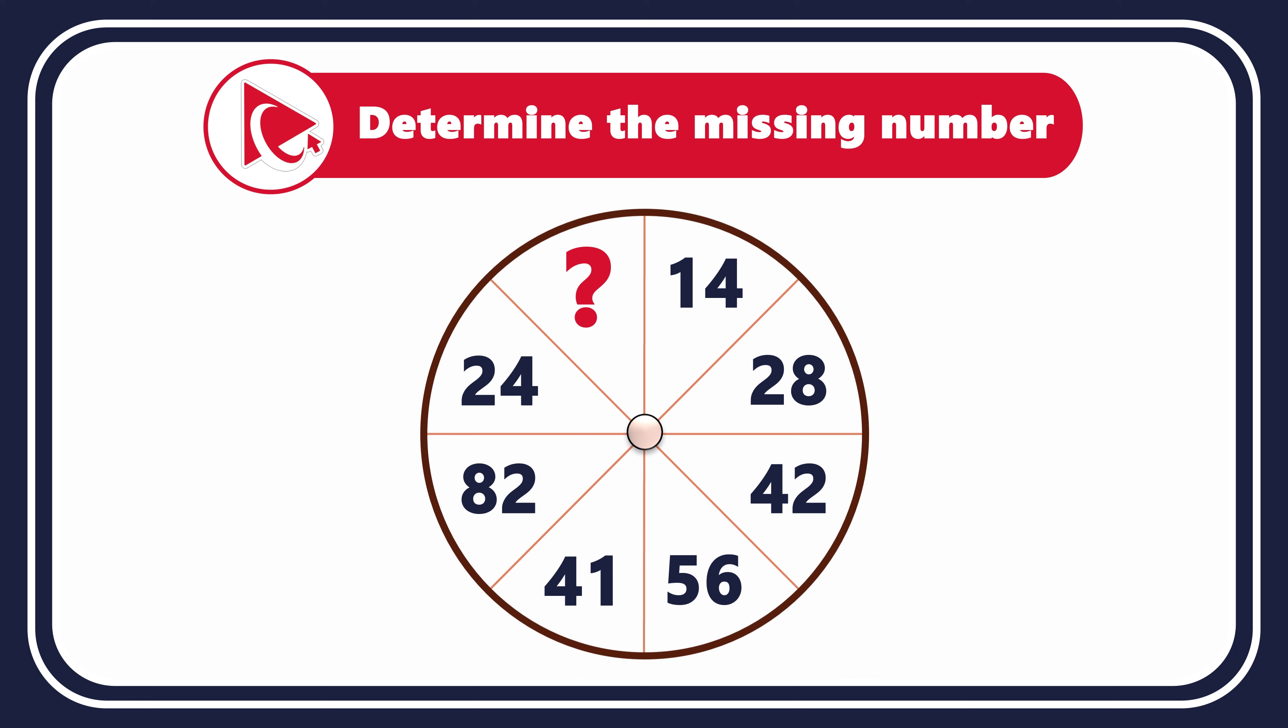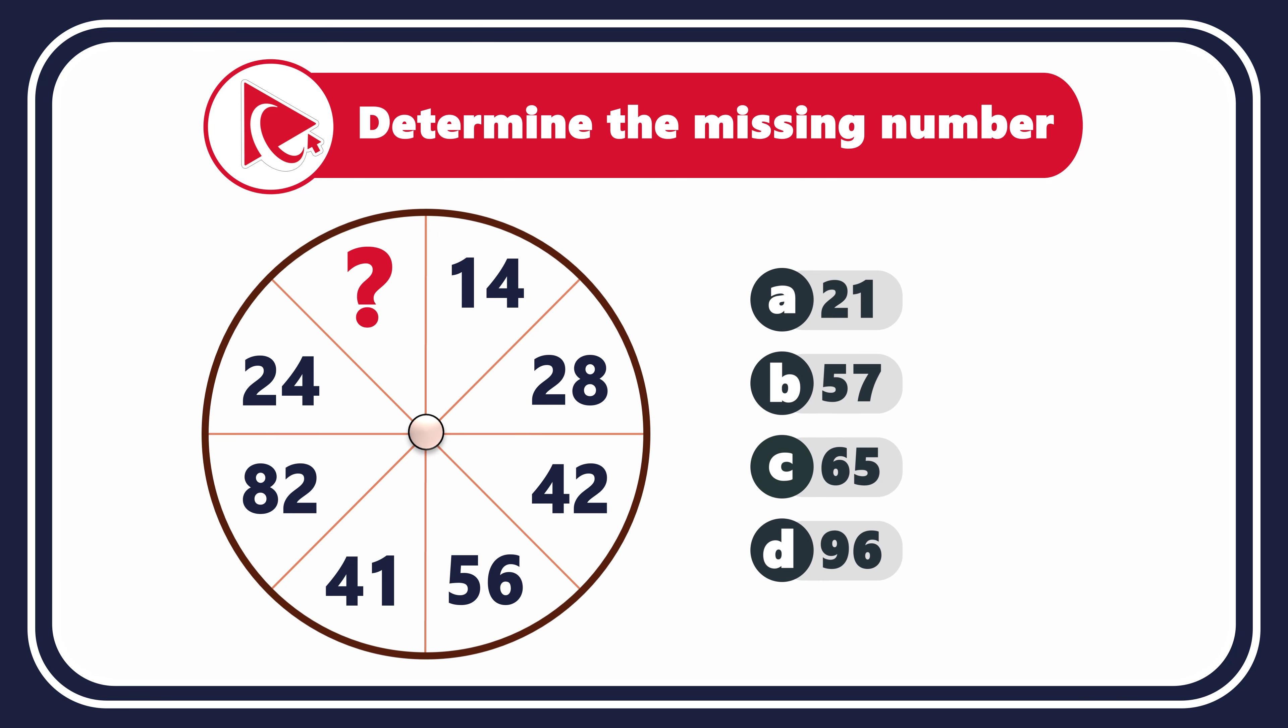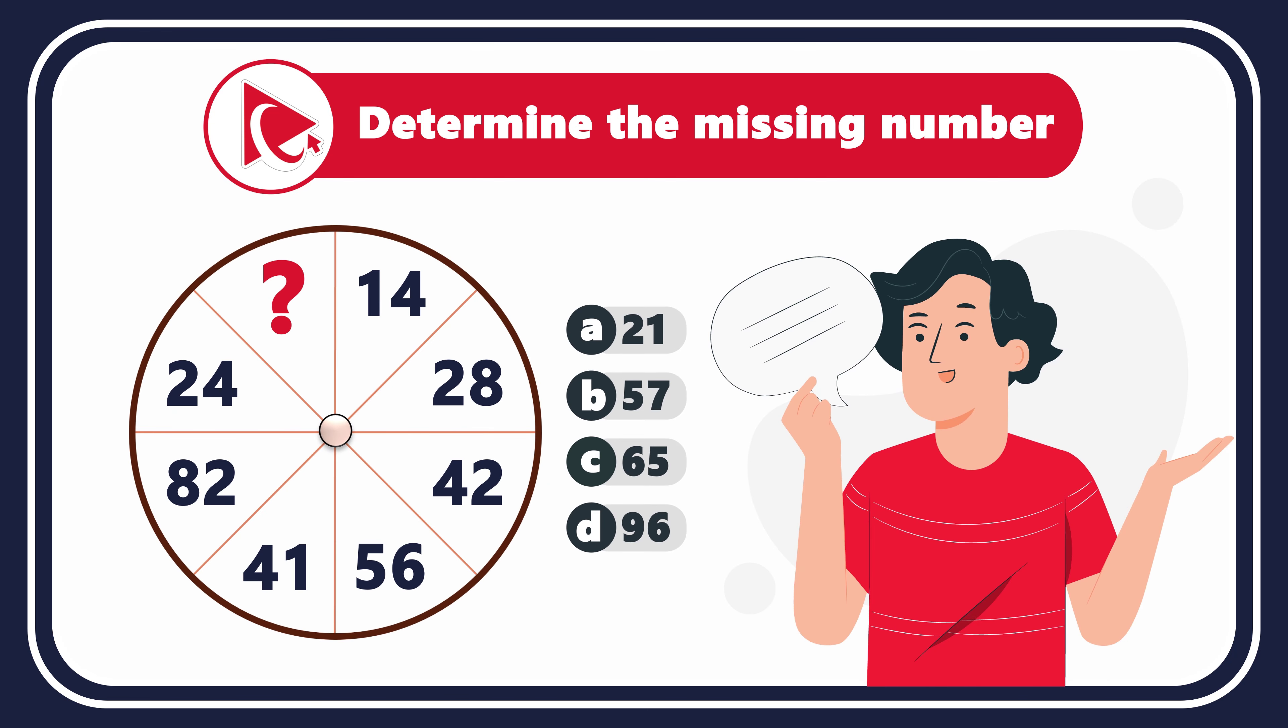You're presented with a circle which is broken down into 8 equal parts. Each part has a number, and the numbers are 14, 28, 42, 56, 41, 82, 24, and then comes the missing number. You need to determine the missing number and select it out of four possible choices. Choice A: 21, choice B: 57, choice C: 65, and last but not least, choice D: 96.